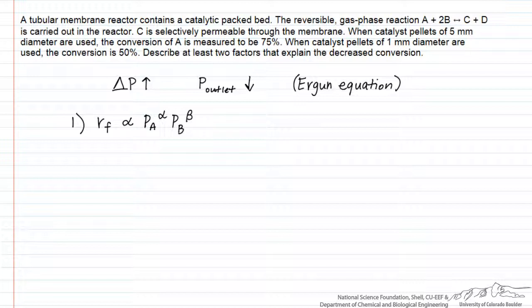Another factor that could be important is that the reactants have more total moles than the products, and so the equilibrium conversion will go down as pressure goes down. Another way of saying that is that the rate of the reverse reaction is not going to go down as quickly as the rate of the forward reaction as pressure drops, so that's going to tend to decrease our equilibrium conversion and our overall conversion as a result of pressure drop.